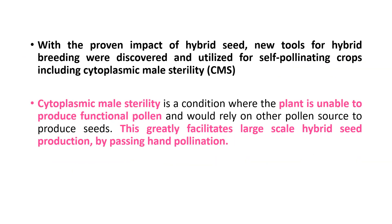With the proven impact of hybrid seed, new tools for hybrid seed production were discovered and utilized for self-pollinating crops, including cytoplasmic male sterility. Cytoplasmic male sterility is a condition where the plant is unable to produce functional pollen and would rely on other pollen sources to produce seed. This greatly facilitates large-scale hybrid seed production by bypassing hand pollination.